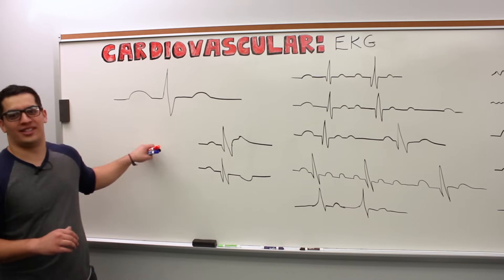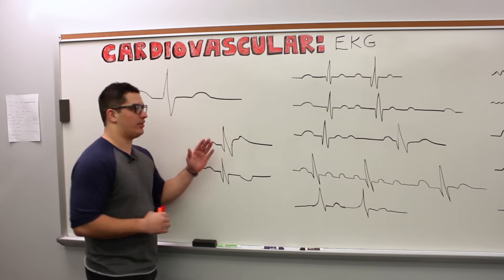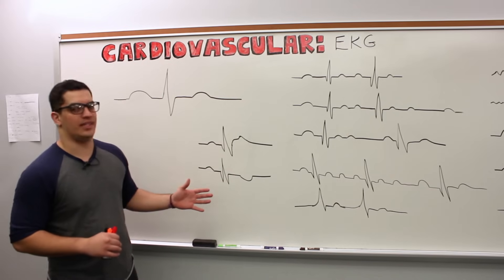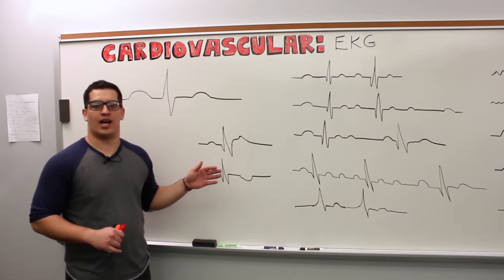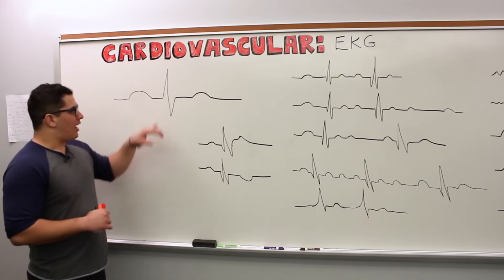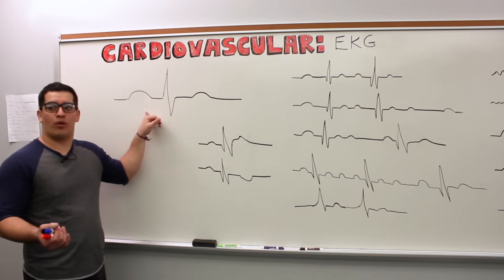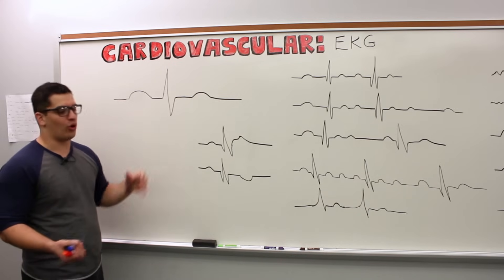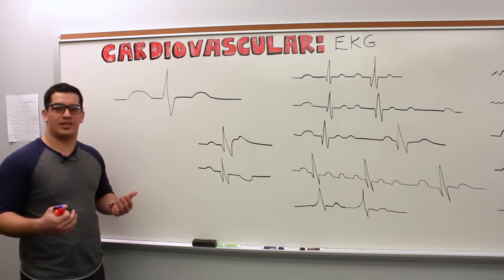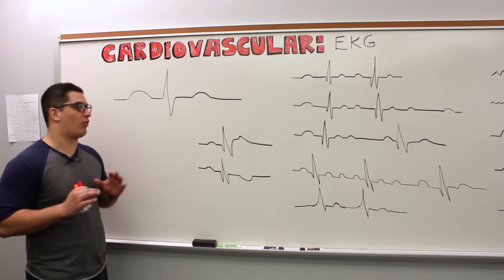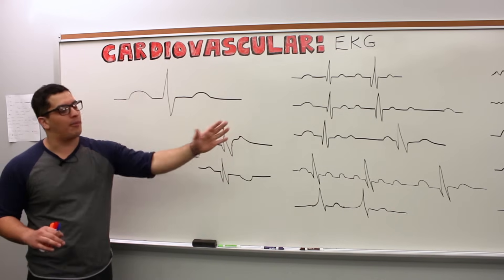We're going to talk about EKGs. Before I get into all of these abnormal EKGs, because we're going to talk about each one in a little bit of detail, we'll go over them in much more detail when we get into pathophysiology. For right now, I want to take a basic look at the EKG. In future videos, we'll also go over the 12-lead system: the three bipolar limb leads, the three augmented unipolar limb leads, and the six chest leads. But for now, we're going to take a basic look at an EKG and then some common abnormalities.